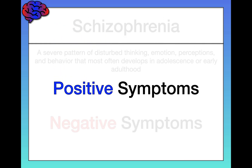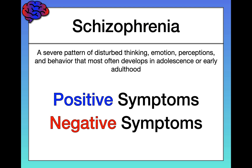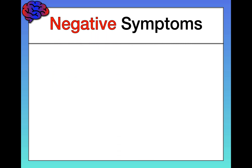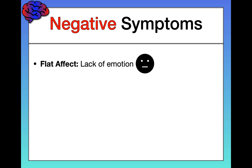So those are the positive symptoms of schizophrenia. Now let's discuss the negative ones. First, flat affect — a lack of emotion. Affect meaning emotion, and flat meaning they're not really displaying any emotion. This is a negative symptom because it's a lack of — an absence, a reduction in emotion.